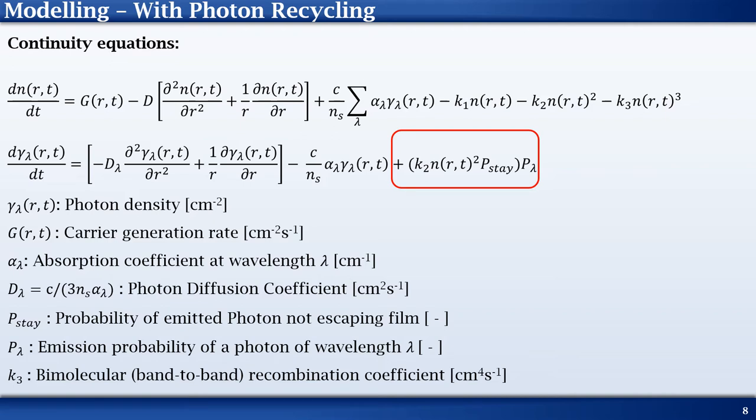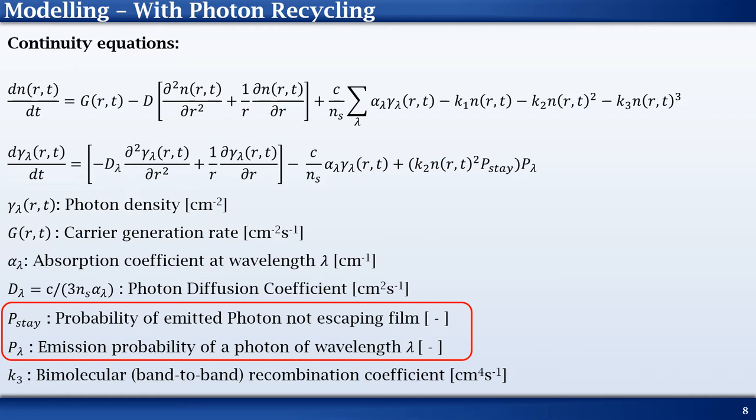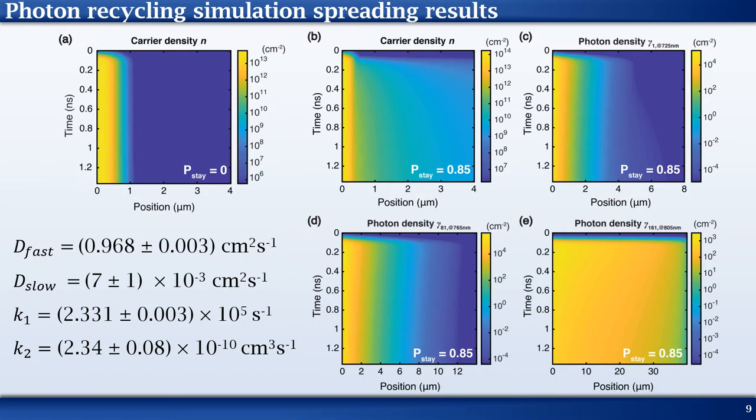The number of photons depends on two probabilities. First is the probability of the photons remaining within the film, which is represented by the variable p_state. Second is the probability of emission at wavelength lambda. This is written as p_lambda. Our calculations indicate the value of p_state for these films is about 0.85.